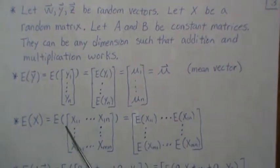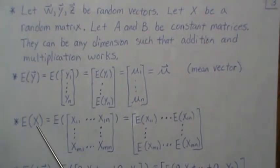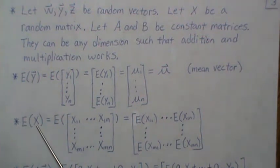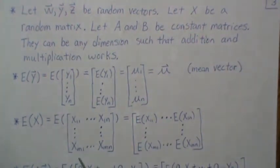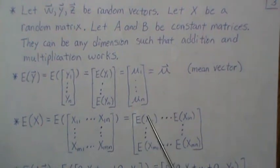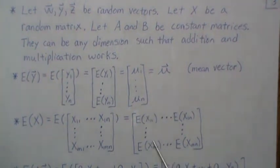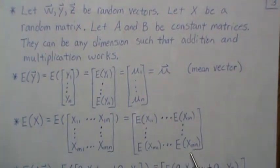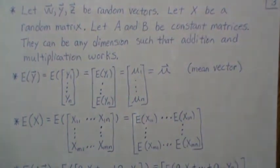The expected value of a random matrix x does not have to be a square matrix — it can be an m by n matrix. The way you take its expected value is component-wise: you do each component.